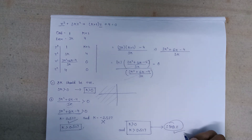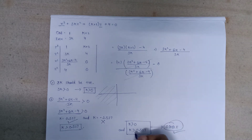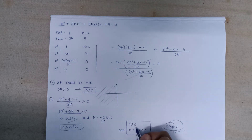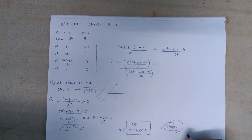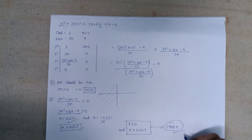In this lecture, we found that for the given characteristic equation to have roots more negative than s = −1, the condition is k > 0.527. If k is greater than 0.527, then only the system will act as a stable system. Thank you.